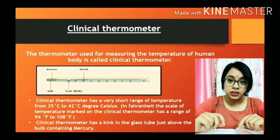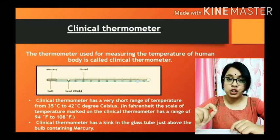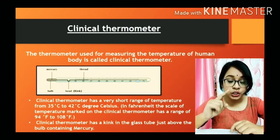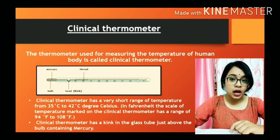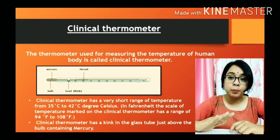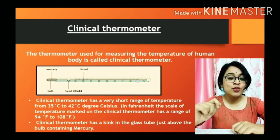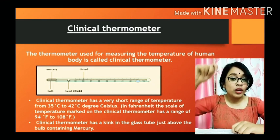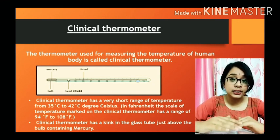Why is that bend present? It is very important for the clinical thermometer. When you measure someone's temperature, you place the thermometer inside the person's mouth, generally under the tongue, for one minute, then take it out. When you take it out, the bulb is no longer in contact with the person, so the mercury may fall back. The kink is present to stop this back flow of mercury, so you can easily read the temperature after removing it. After reading, you jerk the thermometer — when you do that, the force causes the mercury to fall from the bend and settle back into the bulb.